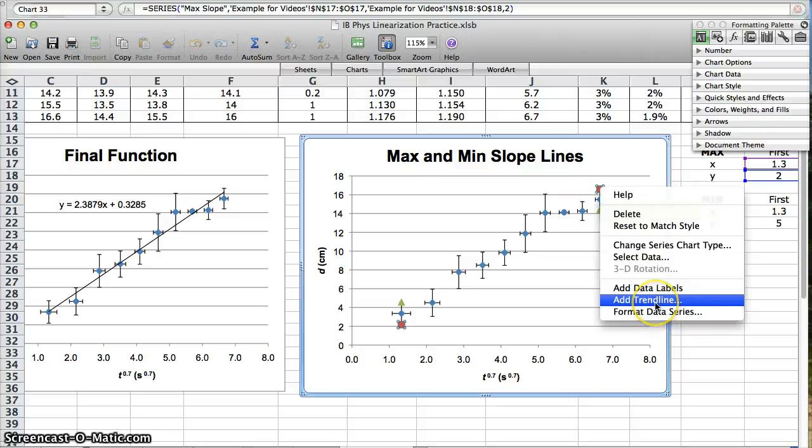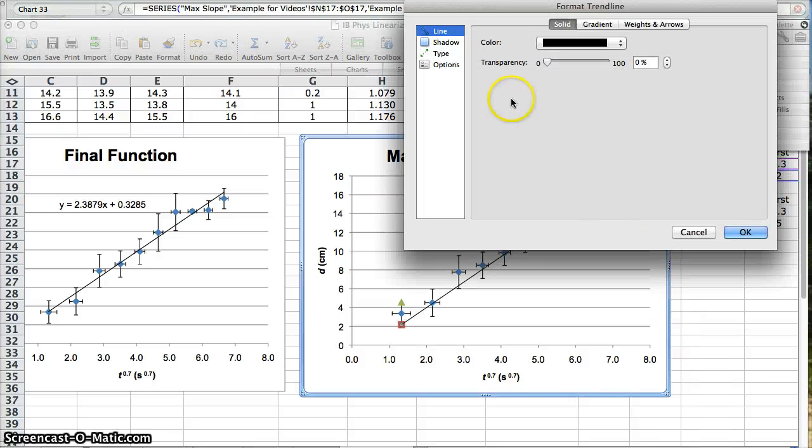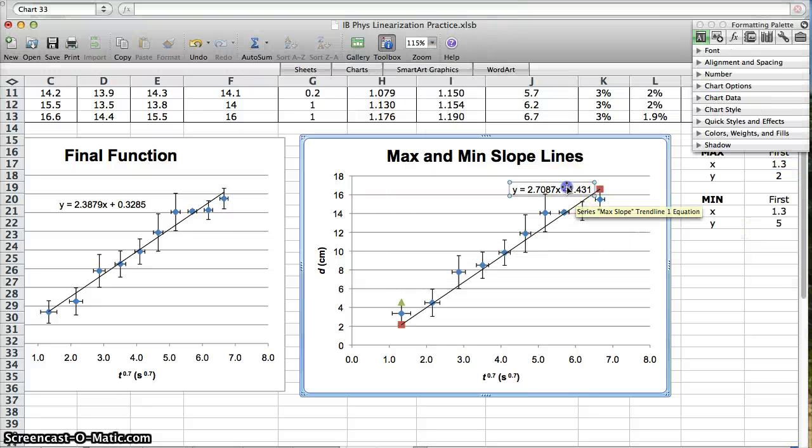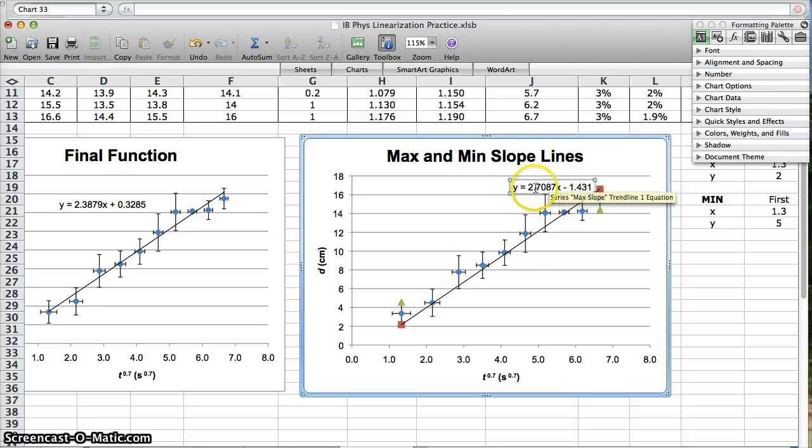You right click, and this is clever. Add a trend line. Show the equation. Display on chart. And let's move that up. So that's my maximum slope. 2.7084. 2.7087.